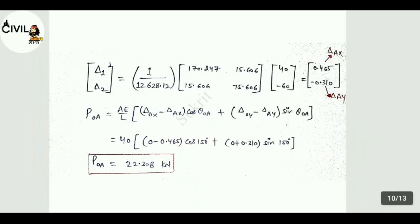See, we are finding force POA. So AE by L into delta OX minus delta AX into cos theta OA plus delta OY minus delta AY into sin theta OA. Value put: delta OX is 0, delta OY is also 0, delta AX is 0.465 and delta AY is minus 0.310. So value for POA is 0.308 kN.